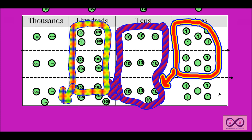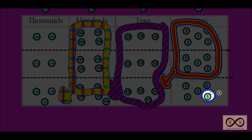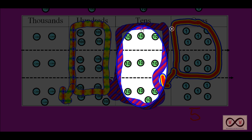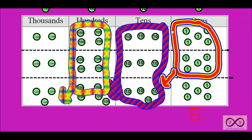Now we can go ahead and total up what we have left. In our ones place, we have one, two, three, four, five — so we have five ones. Moving on to the tens place, we've bundled them all up. We think of that as 10, 20, 30, 40, 50, 60, 70, 80, 90, 100 — the 10 tens becomes 100. We moved it over, so we have zero left in the tens place.